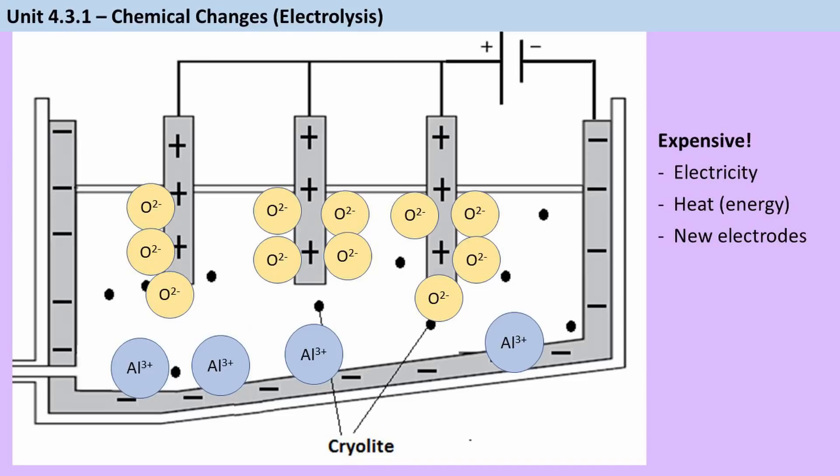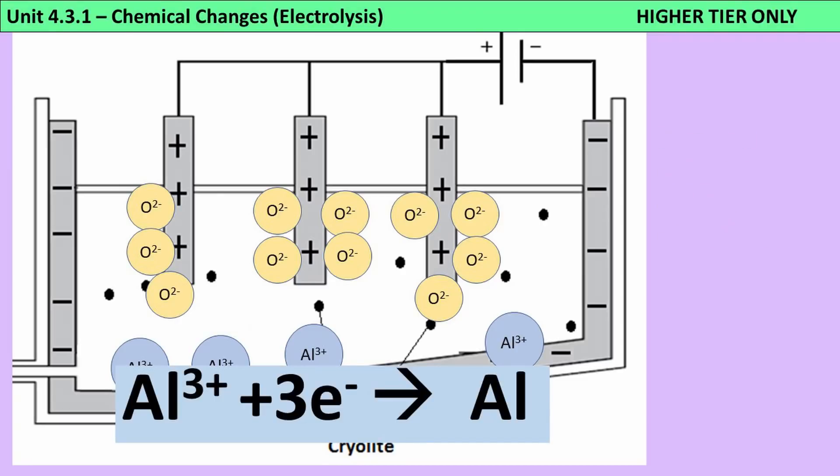Again, if you're sitting higher tier, then you need to be able to write half equations for what's happening to both sets of ions. So your positive aluminium ions, they've got a three plus charge, that means they're going to need three electrons to each turn back into an aluminium atom.